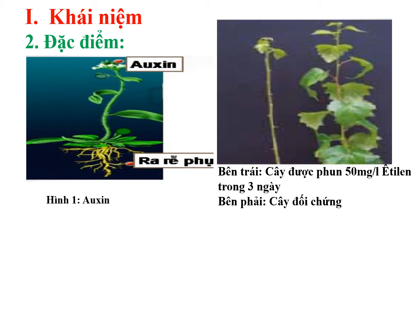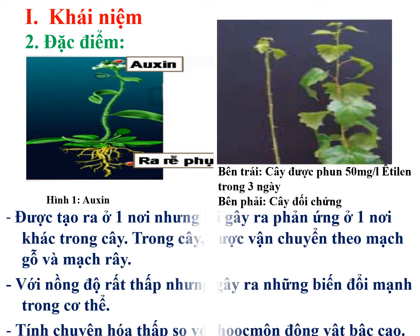Một loại hốc môn thực vật có thể tham gia vào nhiều tác dụng khác nhau trong cơ thể, trong khi đó ở động vật bậc cao thì mỗi loại hốc môn chỉ có một tác dụng nhất định. Điều đó chứng tỏ hốc môn ở thực vật có tính chuyên hóa không cao so với hốc môn ở động vật. Vậy thì hốc môn thực vật có 3 đặc điểm: thứ nhất - tạo ra ở một nơi nhưng gây phản ứng ở nơi khác; thứ hai - với nồng độ rất thấp nhưng gây ra những biến đổi rất mạnh; thứ ba - tính chuyên hóa thấp hơn so với hốc môn động vật bậc cao.